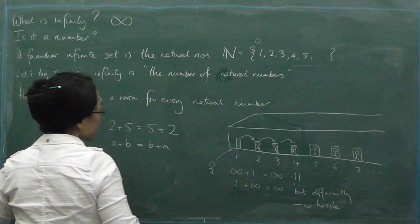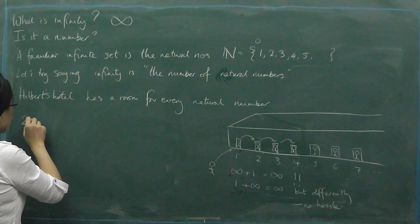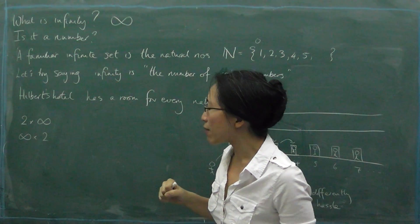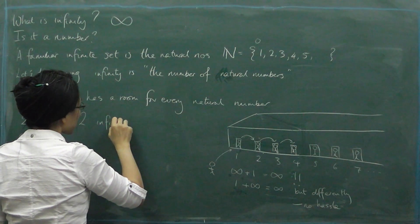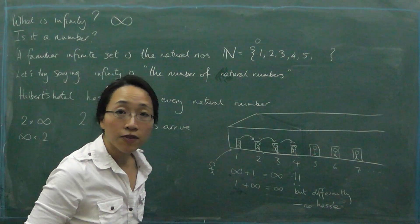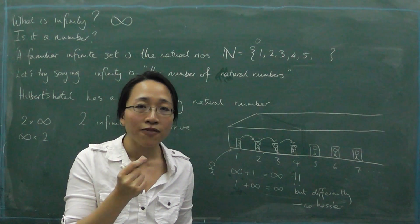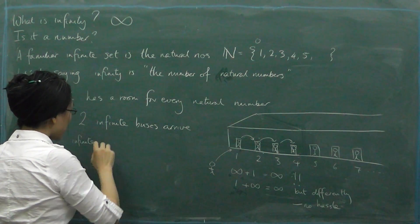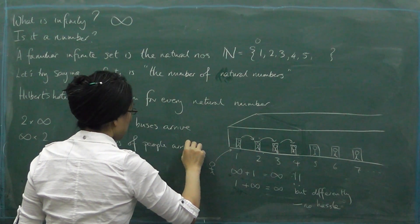Let's do another example and keep track of whether people had to move rooms. Let's try two times infinity and infinity times two. Two times infinity could mean two infinite bus loads — two buses arrive, each with an infinite number of people. Infinity times two could mean two people arriving an infinite number of times — infinite pairs of people arrive.